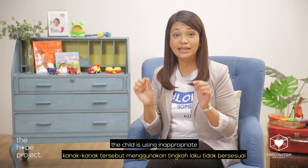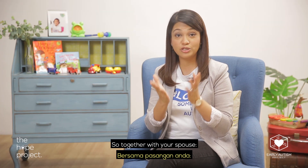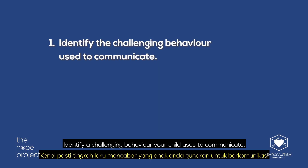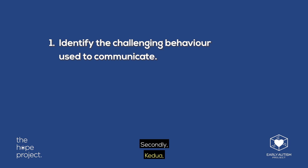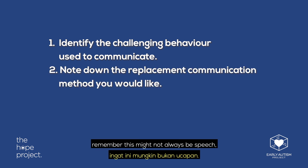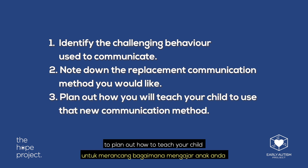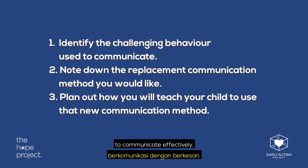So together with your spouse: number one, identify a challenging behavior your child uses to communicate. Secondly, note down how you would prefer your child to communicate — remember this might not always be speech, it could be through pictures or devices. Thirdly, plan out how to teach your child to communicate effectively.